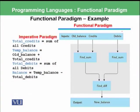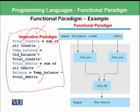Here is a program written in imperative paradigm which we discussed previously. Total credits is assigned by the sum of all credits, meaning all credits and their sum are put in a variable called total credits. Then old balance and total credits are added to form the temporary balance. Total debits are the sum of all debits, and balance will be temp balance minus total debits. This is the imperative paradigm we learned previously.